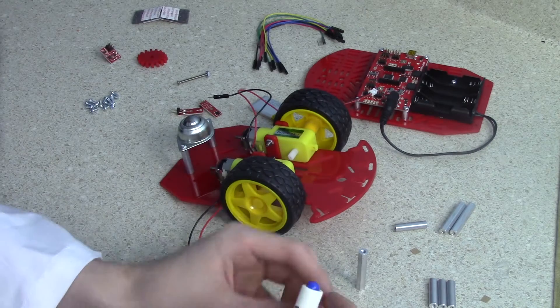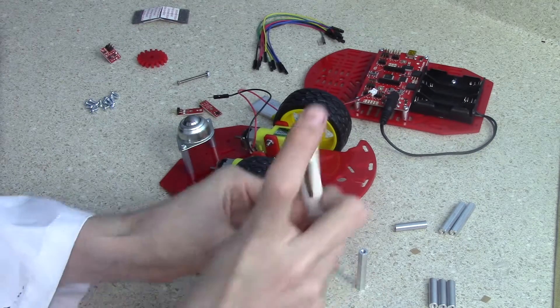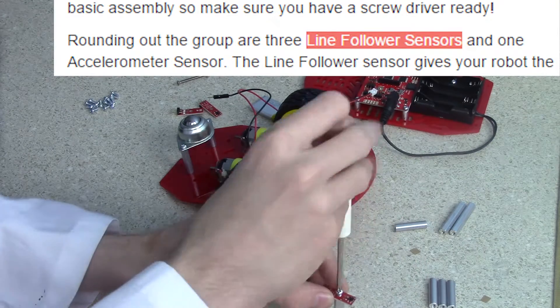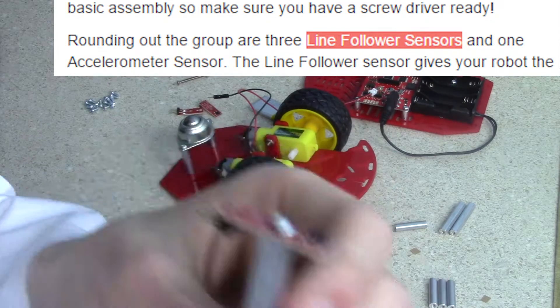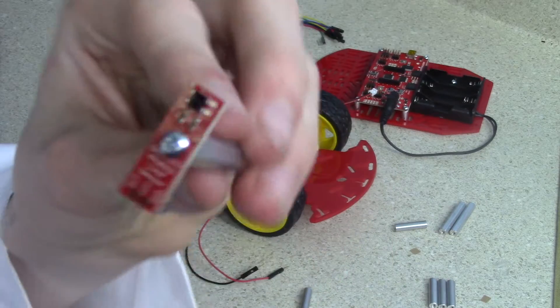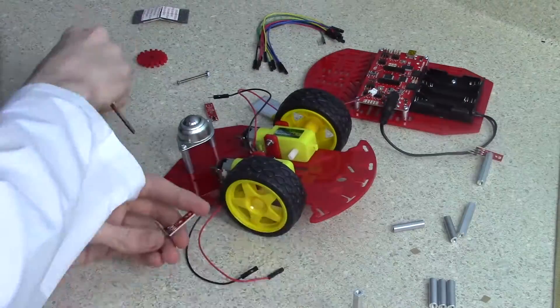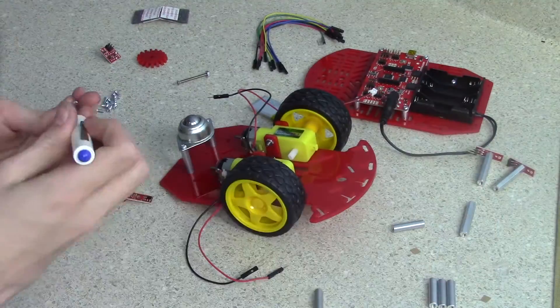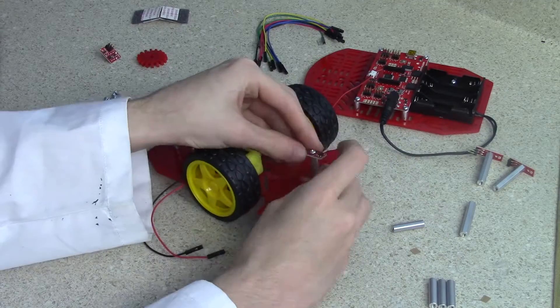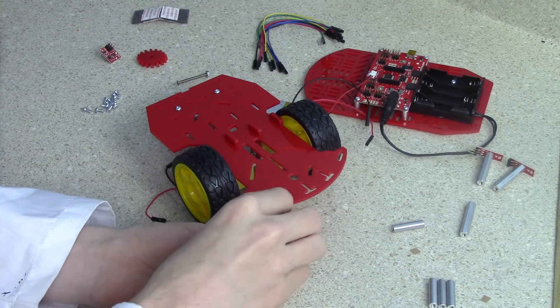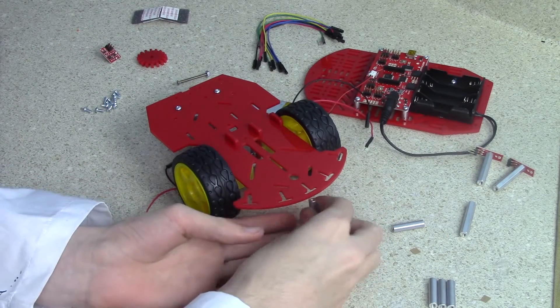We're almost done so screw the three line follower sensors and yes that is their official name under the largest standoff screw and then into place on the front of the car. And don't think I can't still see you Mr. Ruler trying to make yourself an internet star. Well it ain't gonna happen so just go back to being a marker just outside of frame.